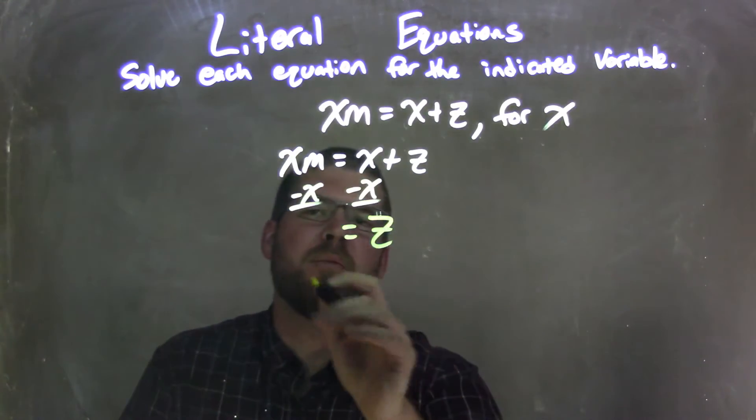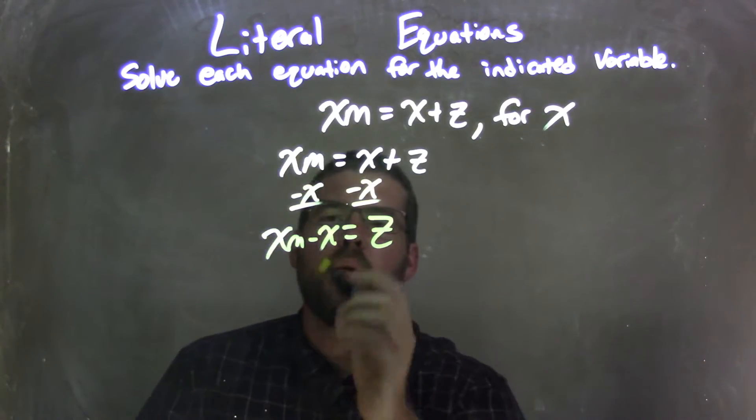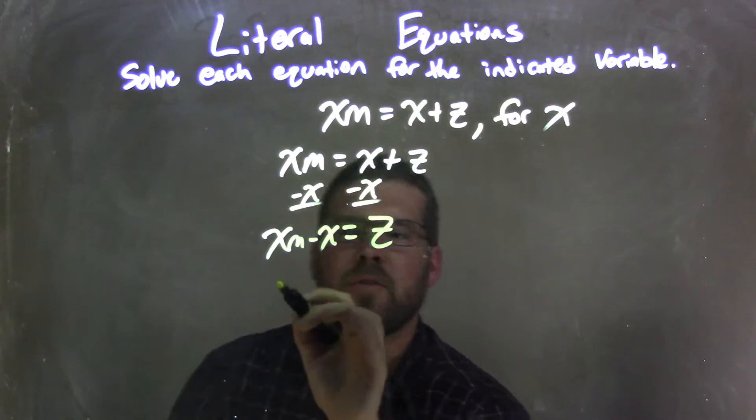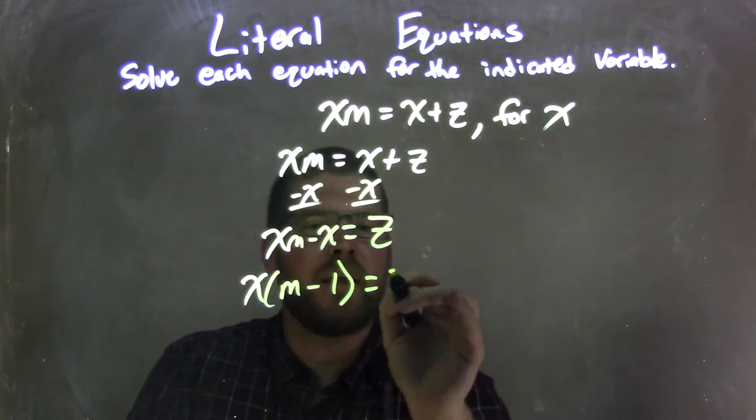That leaves us with a z by itself on the right, and an xm minus an x on the left. Well, now I see two x's there. I can pull out an x from that part, leaving me with x times m minus 1, and that's equal to my z.